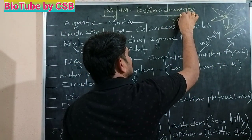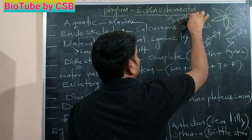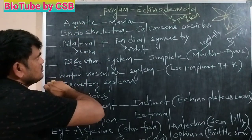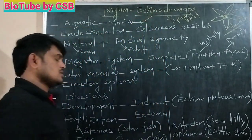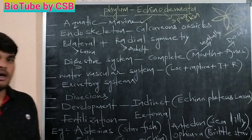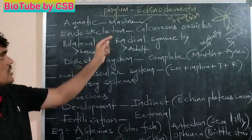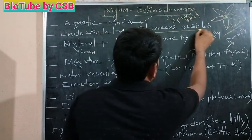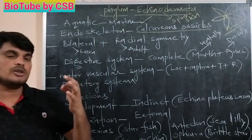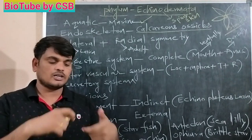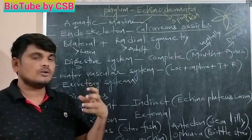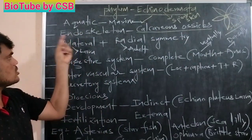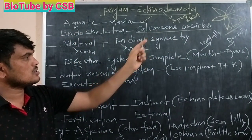These are aquatic — mainly marine animals that live in sea water. The endoskeleton is made up of calcareous ossicles. Ossicles are minute bones connected together. Calcareous ossicles make up the endoskeleton.